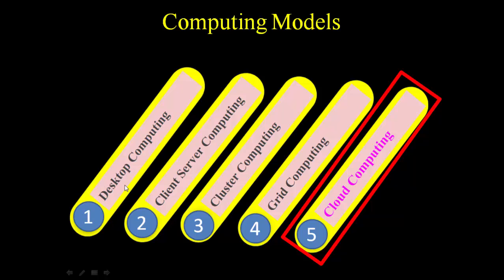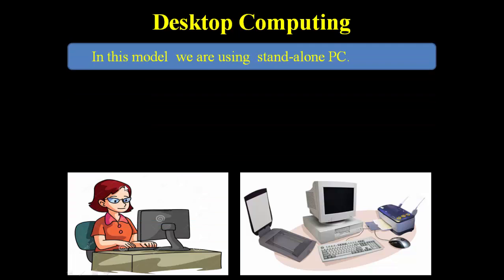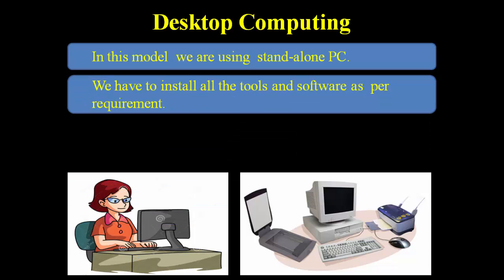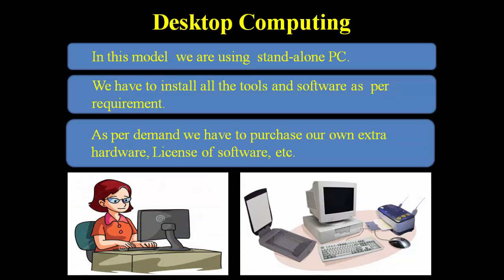So let us first understand desktop computing. In desktop computing we are using a standalone PC — it means we are not using the internet; we have one separate standalone computer. We have to install all the tools and software as per the requirement. If you want to use any software, then you have to purchase a license of the software and install it in our PC, then we can use it. Same way if you want extra resources, you have to purchase those resources and connect them with your computer. So in desktop computing, as per demand, we have to purchase our own extra hardware and software licenses.